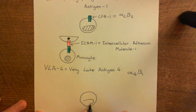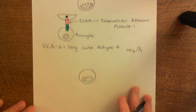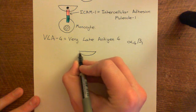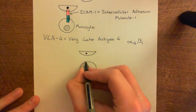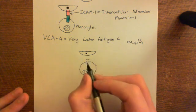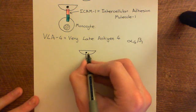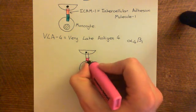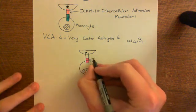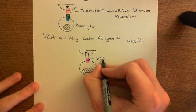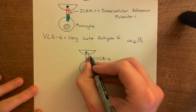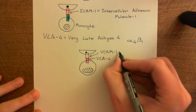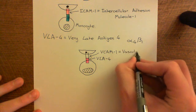The monocyte circulates in the bloodstream. When endothelial cells become activated because the tissue is infected, they express a cell adhesion molecule that binds to VLA-4 — another immunoglobulin superfamily cell adhesion molecule called VCAM-1, which stands for vascular cell adhesion molecule 1.